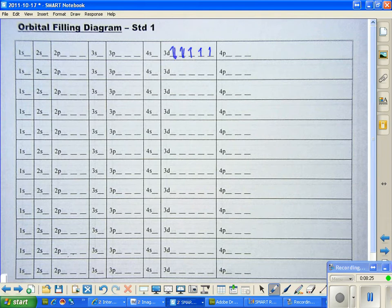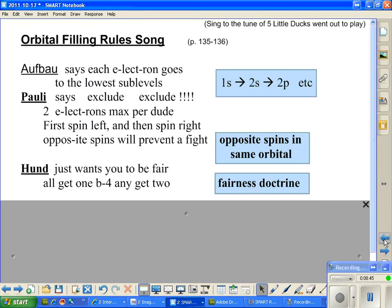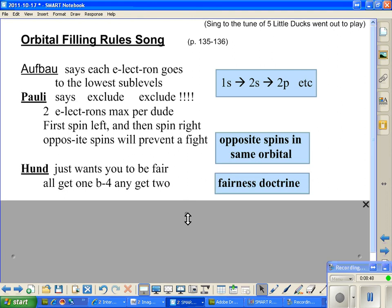And down we go. And down and down and down. And that's the way we represent the electrons coming into the atom or being placed in the atom so that the placement will work and everything will be correct within the atom for it to be able to function and be what it is. So let's look at this. And now you know not to be crude. Always be a fair and happy dude. Now you know all the orbital filling rules and my crazy little song to go along with it. I hope this helps.